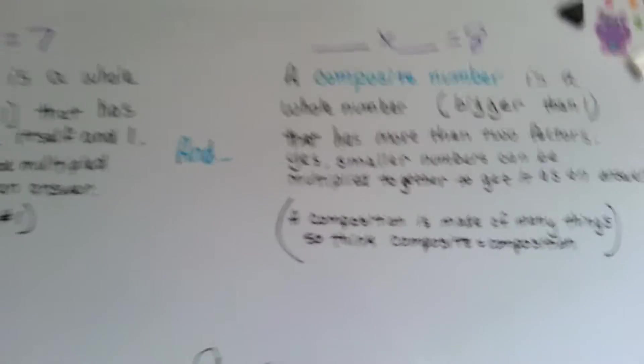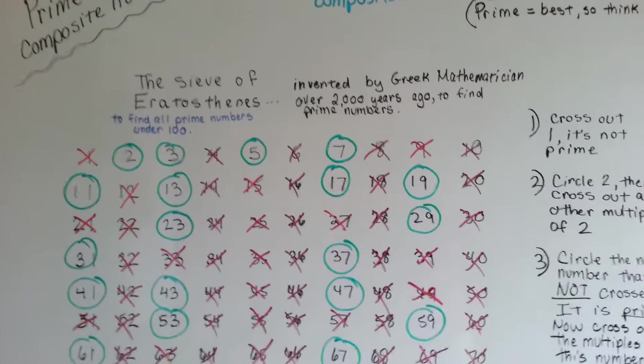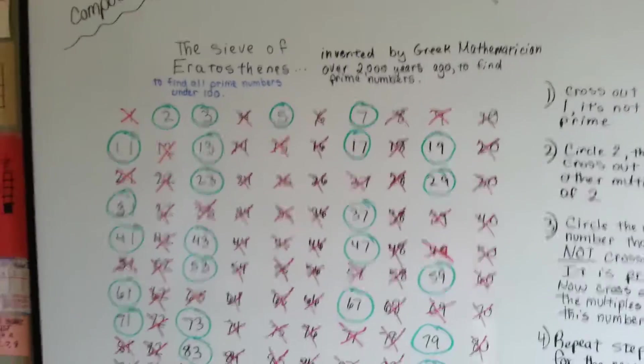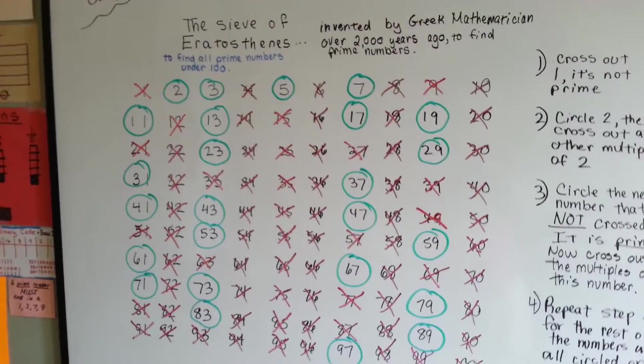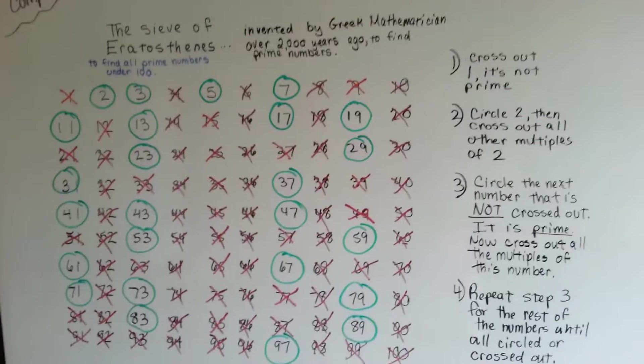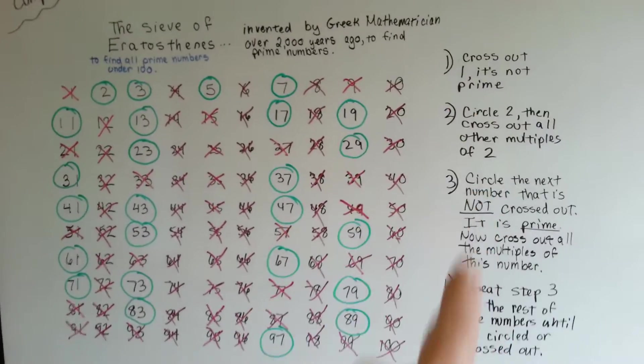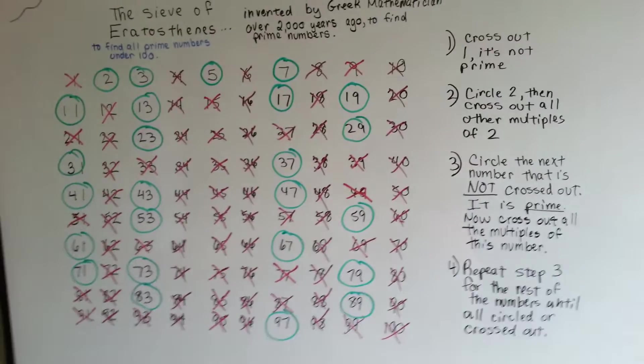On that note, there is a thing called the sieve of Eratosthenes. Eratosthenes was a Greek mathematician over 2,000 years ago, and he found a way with this chart that you could find all the prime numbers under 100. If you follow these rules, and you can pause this video right now to write those down,